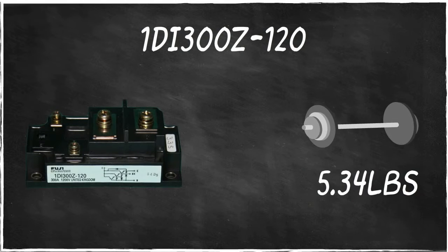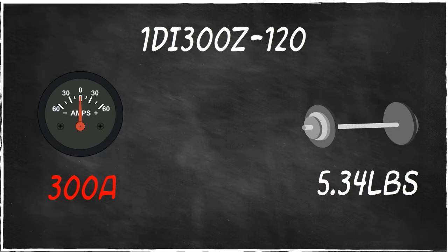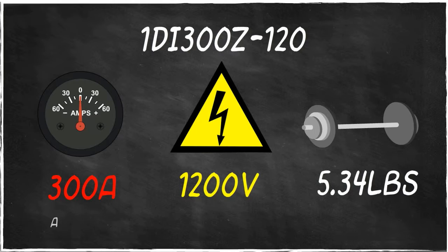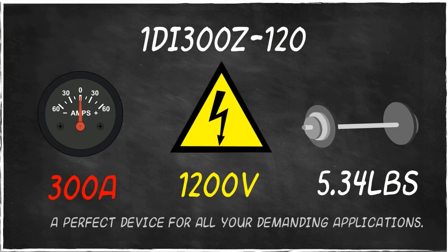1DI300Z120 weighs 5.34 pounds and generates power of up to 300 amps of collector current and collector emitter voltage of 1200. Indeed, it's a perfect device for all your demanding applications.